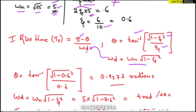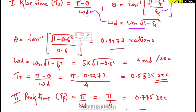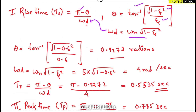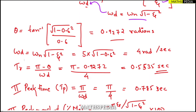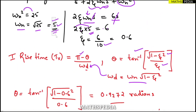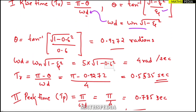Substituting zeta = 0.6 into the theta formula gives the theta value in radians. For omega_d, substituting omega_n = 5 and zeta = 0.6 gives omega_d = 4 radians per second.